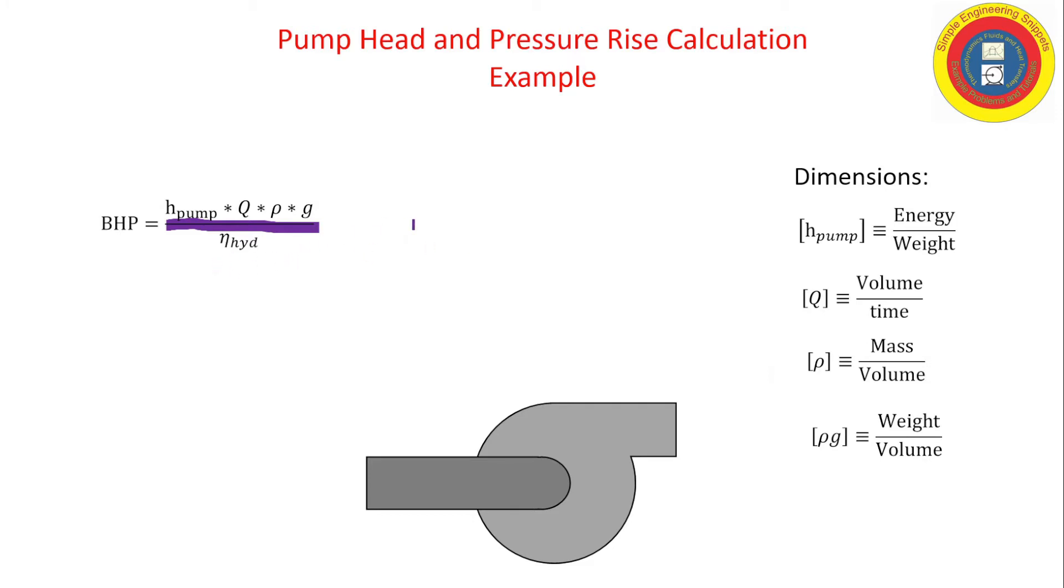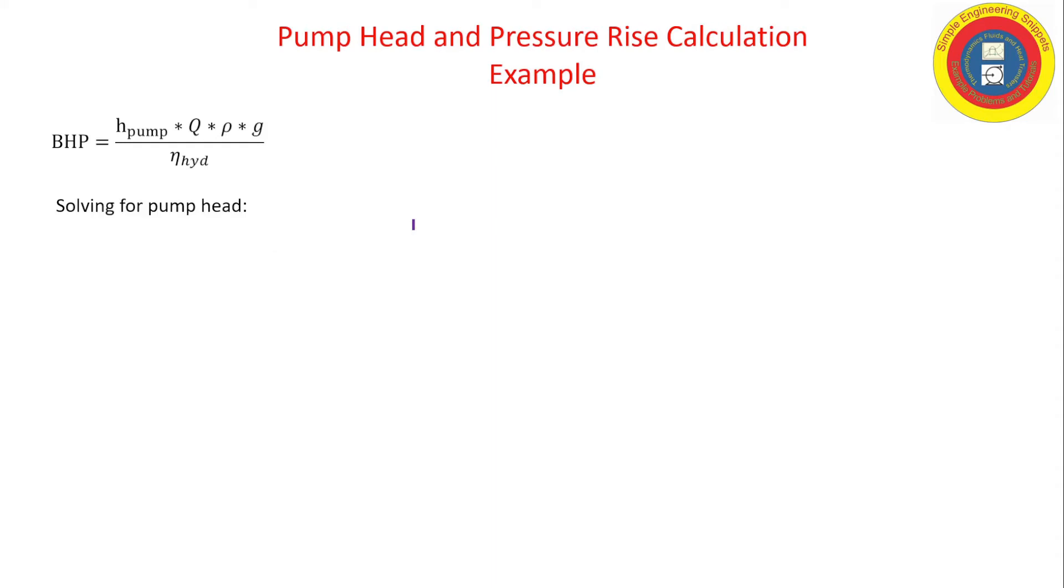Okay, so let's solve this equation for the pump head. We're going to be working in British gravitational, which is an English system, and SI. So we provided the flow, the densities, and the brake horsepower.